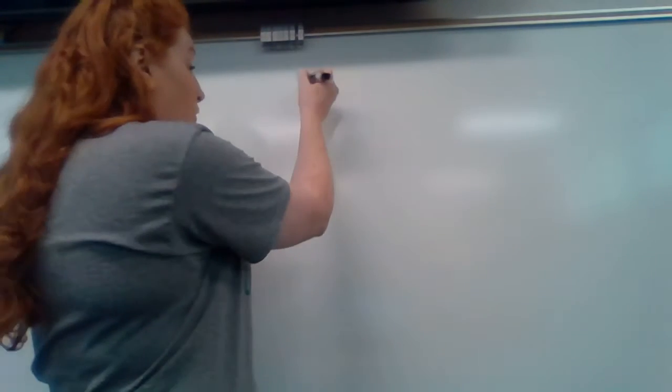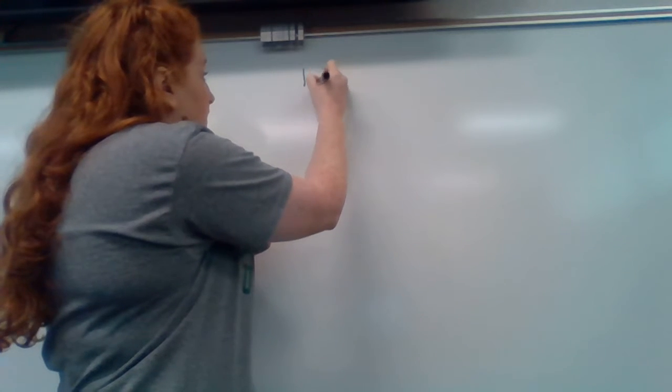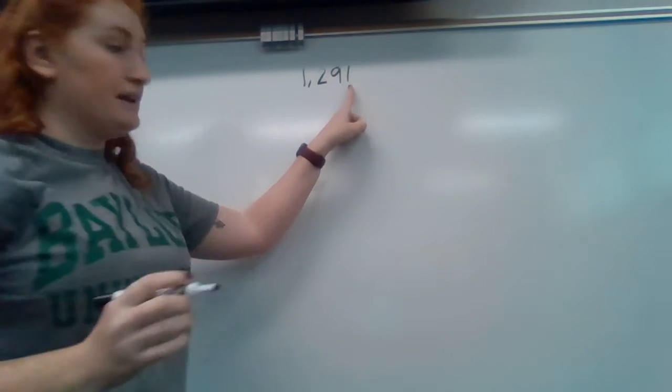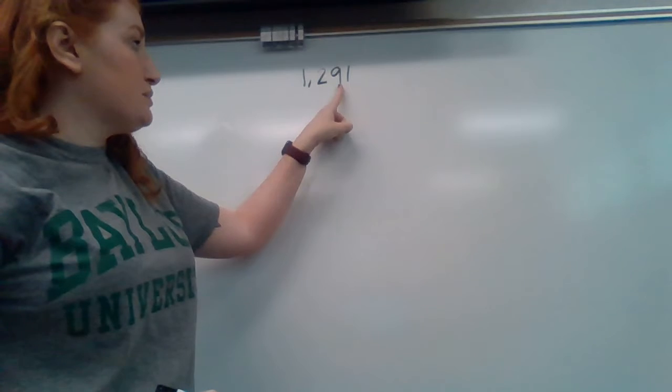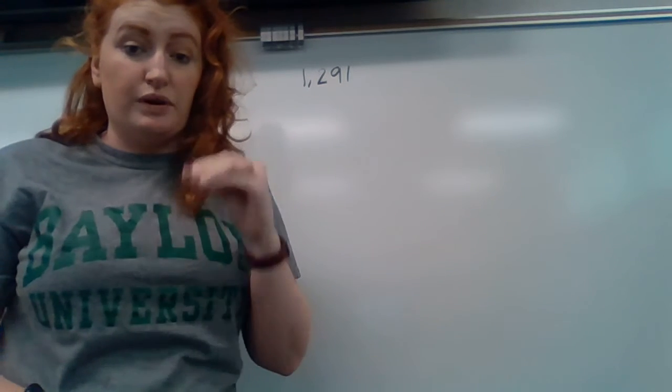So obviously four digit numbers look like this. There is a digit in the ones place, the tens place, the hundreds place, and the thousands place. That gives you a four digit number.